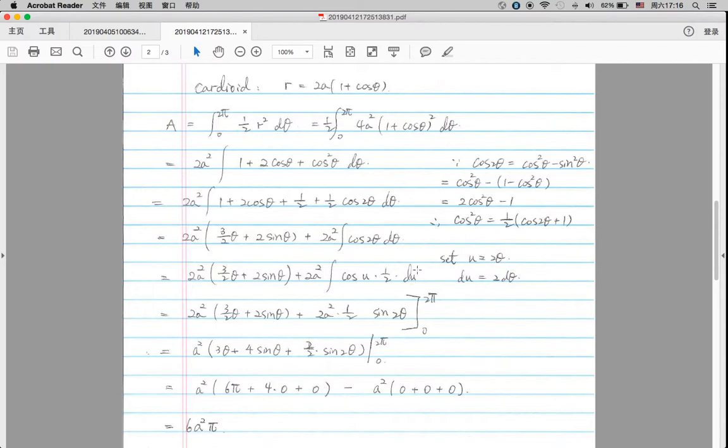Since we only have 1 d theta here, d theta is equal to 1 half du. So that's another thing we need to take care of, since we have 2 theta within cosine.